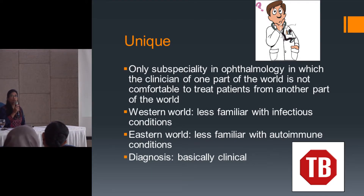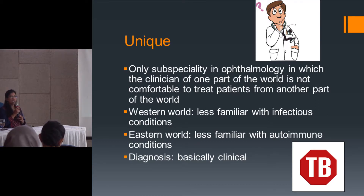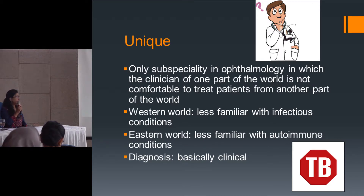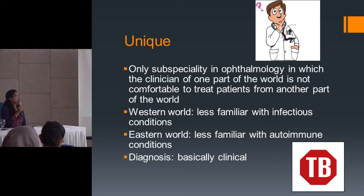For example, we recently had a Nepali living abroad who had pan-uveitis. He was seen in South Korea and diagnosed with toxoplasmosis, but was not getting better. He then went to the USA and was seen by a renowned doctor there, but the treatment made little difference and he had blurring of vision in one eye. When he came to us, we started treating him and surprisingly he got better. His vision was almost 6/36 and after treatment he regained vision up to 6/6 partial. It turned out to be a case of toxoplasmosis — the doctors abroad were not aware of it and so couldn't make the diagnosis.